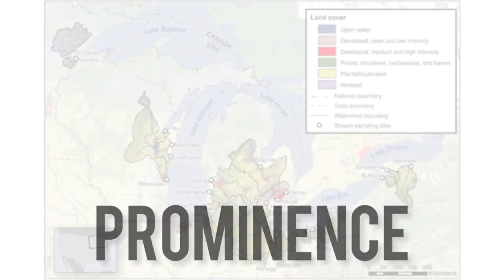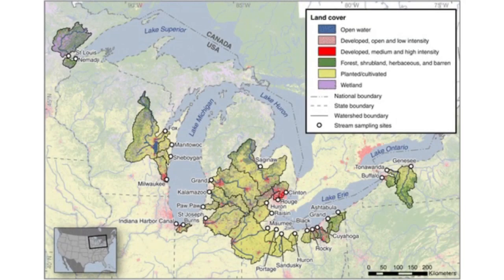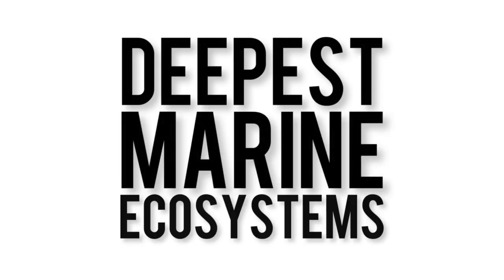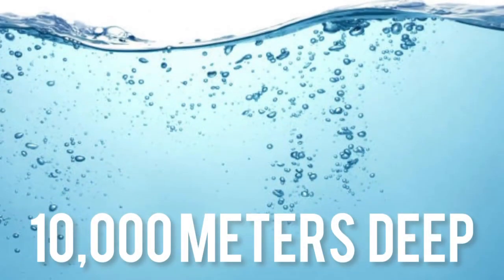One of the most concerning factors with microplastics is their prominence. In an extensive study done by Austin Baldwin, Stephen Corsi, and Sherry Mason in 29 different Great Lakes tributaries throughout six different states, microplastics were identified in every single sample. In addition to hitting close to home, microplastics are an issue far away as well. In a study done by A.J. Jameson, microplastics were detected in six of the deepest marine ecosystems on Earth, including the Mariana Trench, which is deeper than the height of Mount Everest at more than 10,000 meters deep.